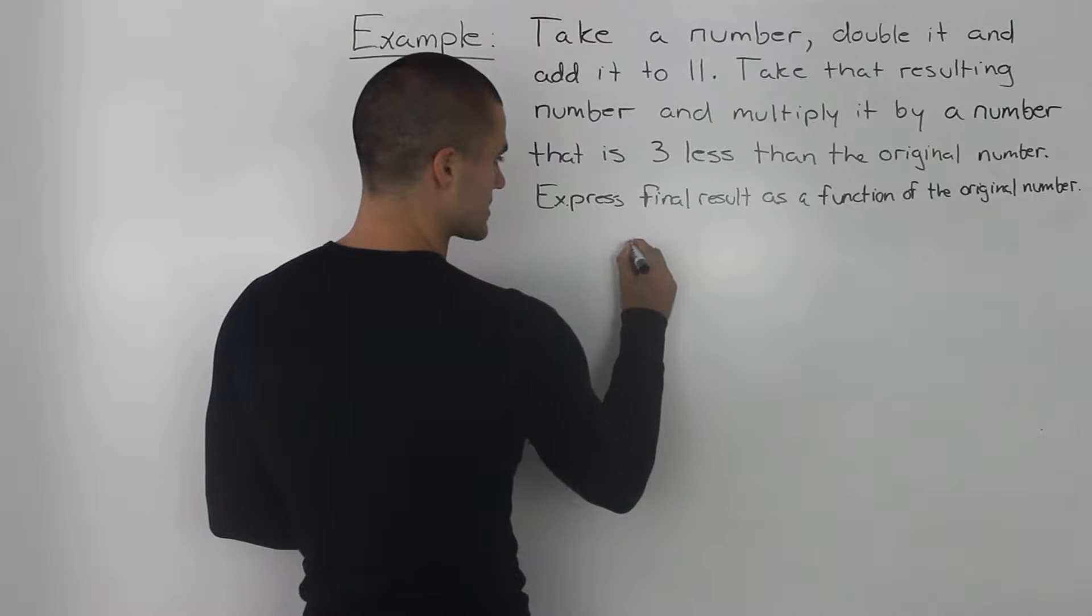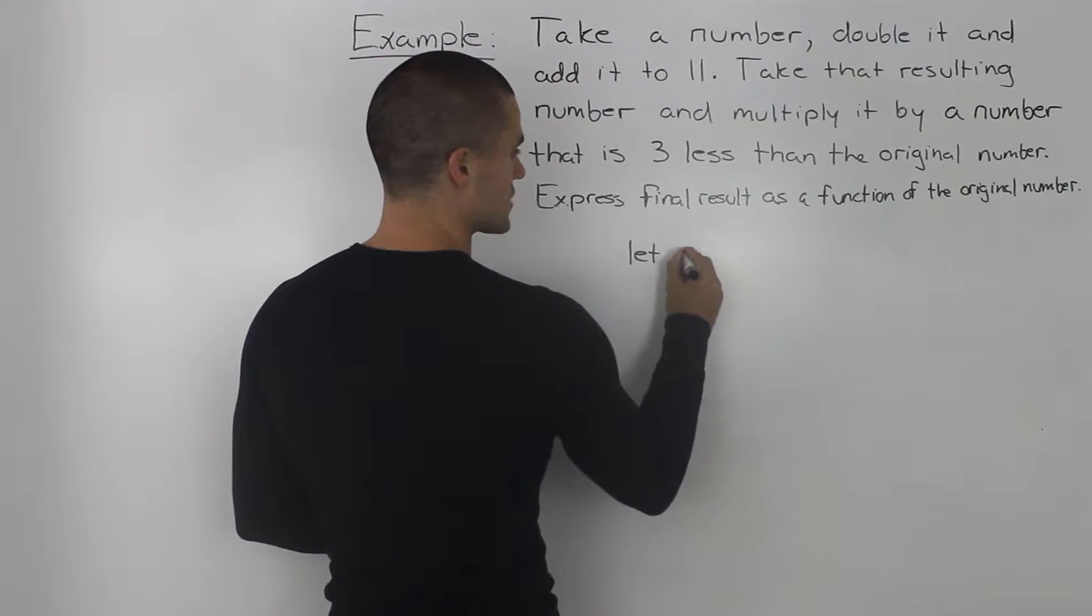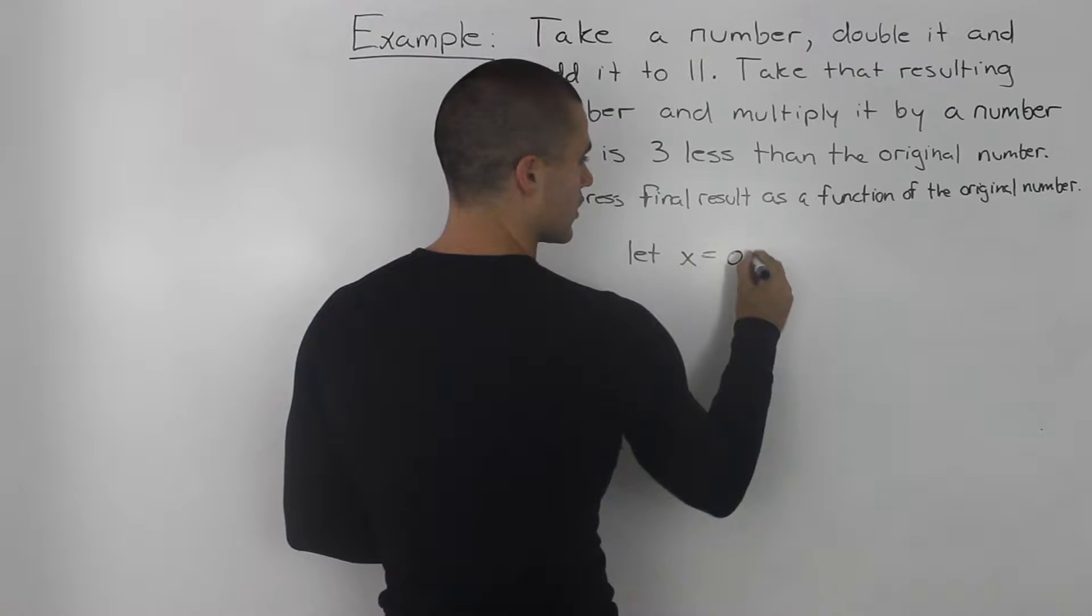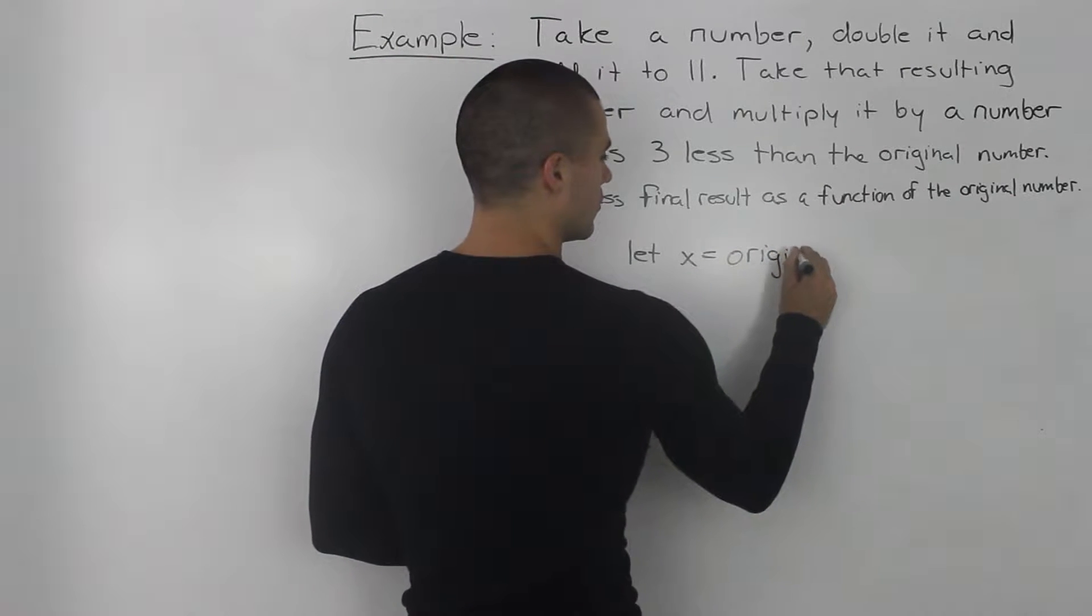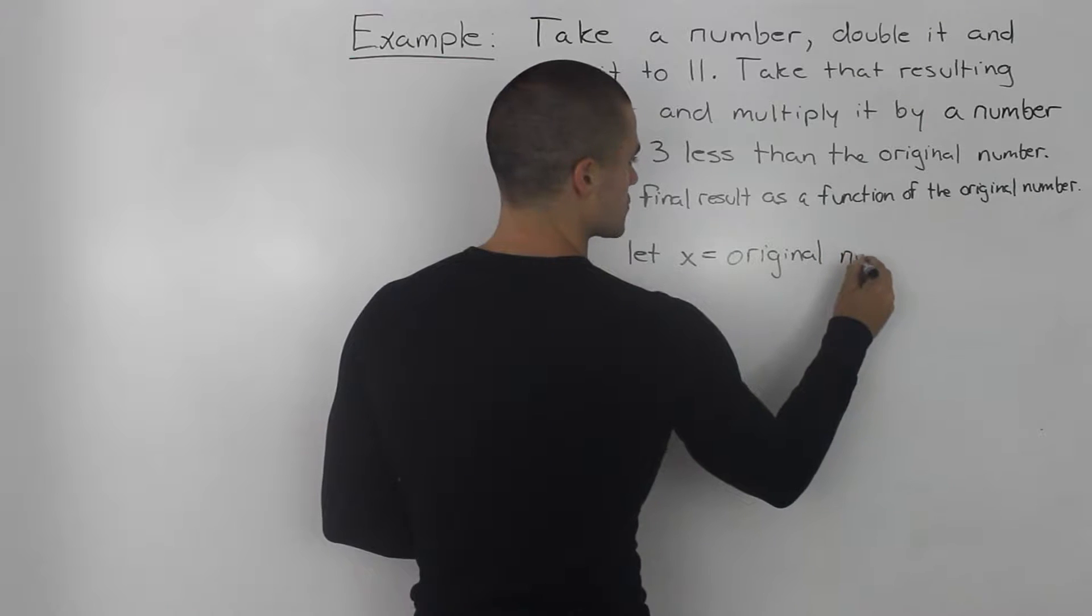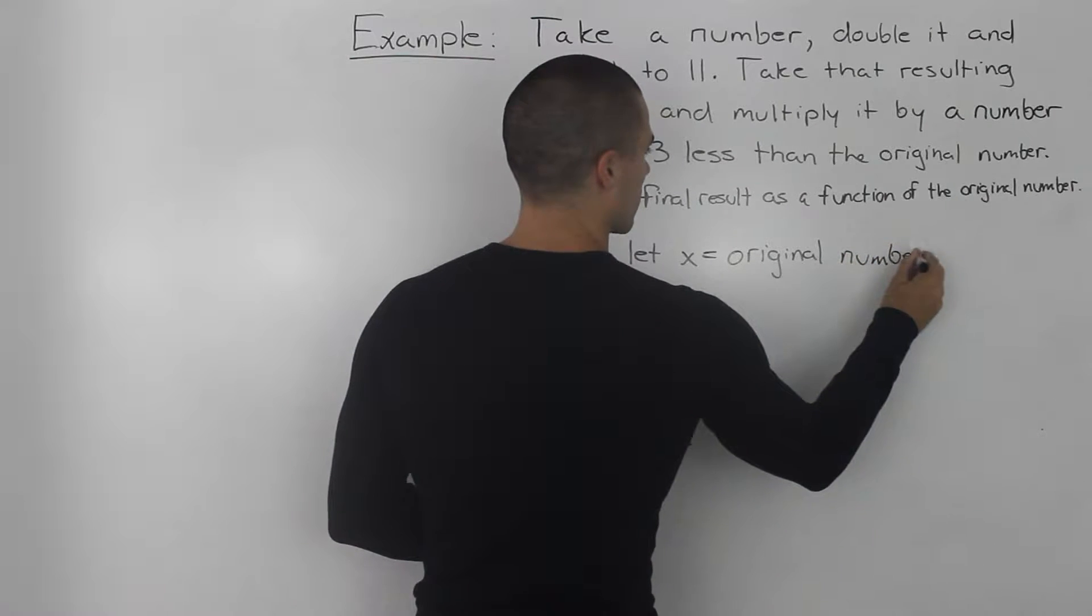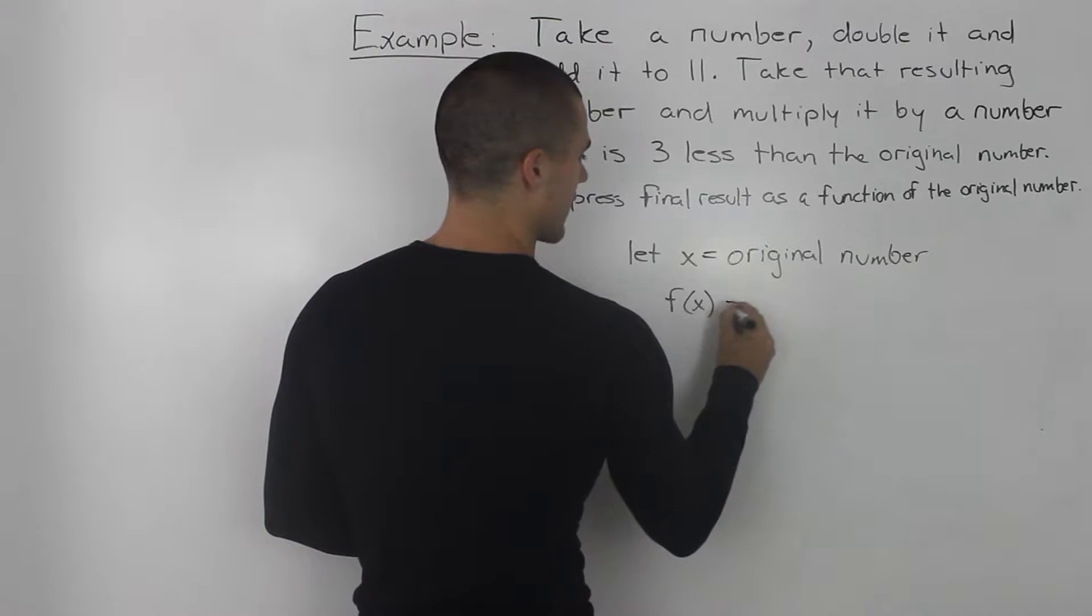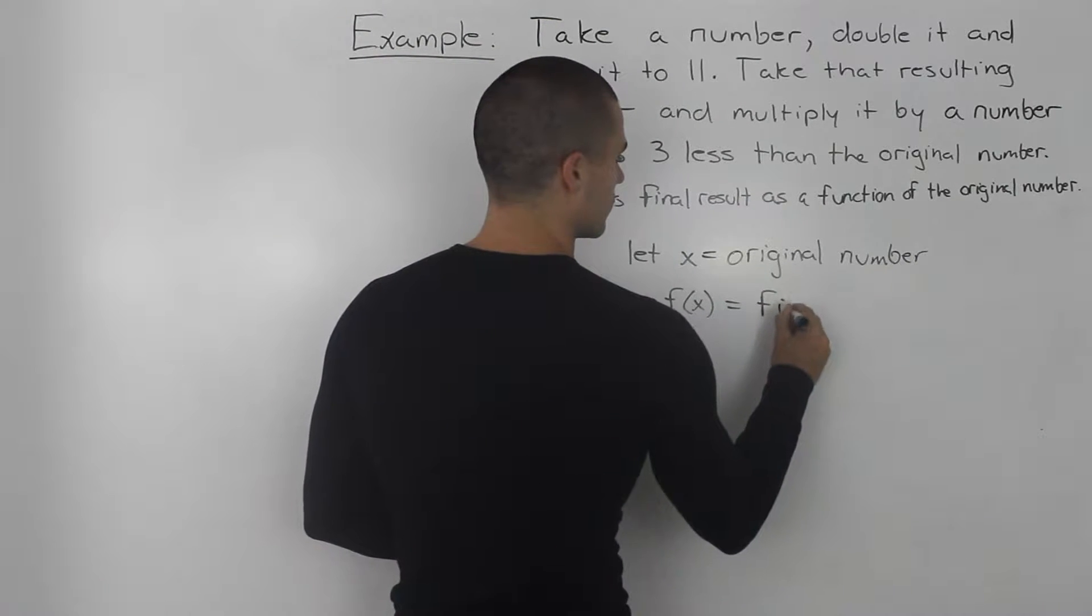So, let's start off by introducing a variable x, and let x equal the original number that we choose. And then let's let f of x equal the final result.